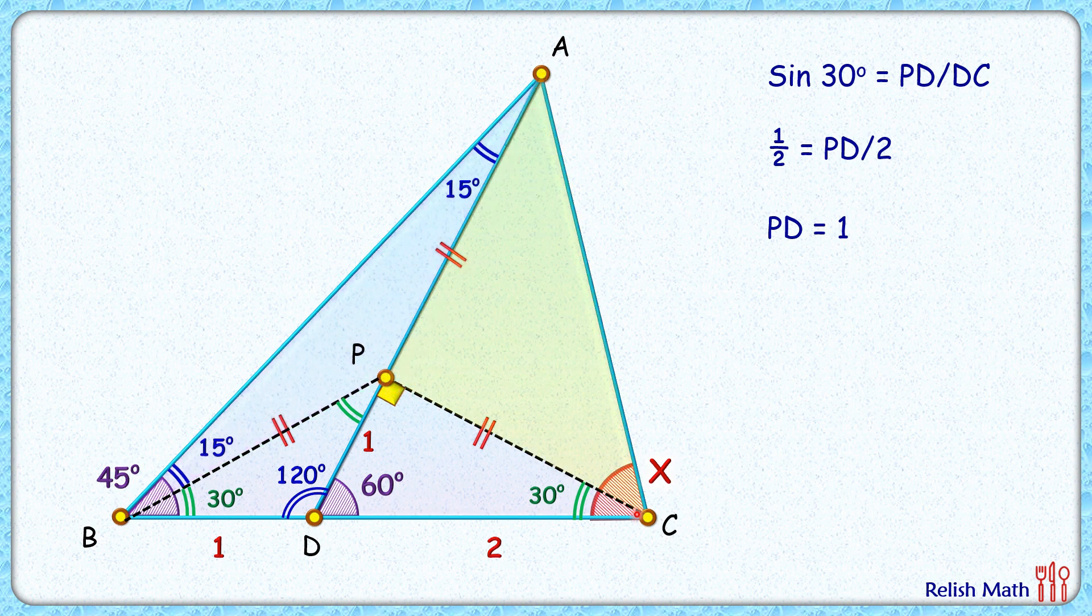Now if you observe this triangle APC, two of the sides are equal and this angle P is 90 degrees, so basically these two angles will be equal. Applying angle sum property, we'll get each of these angles as 45 degrees. And the value of our angle x will be 30 plus 45, or 75 degrees. That's our answer.